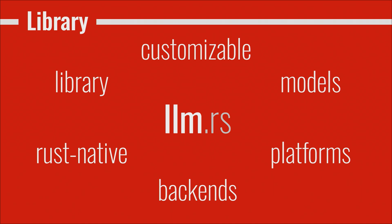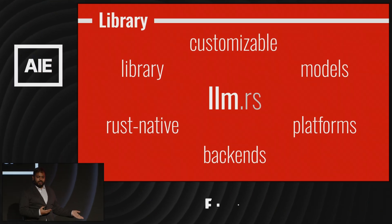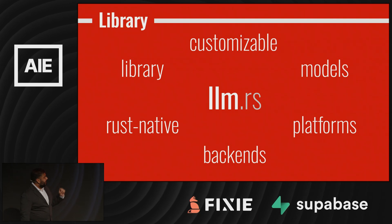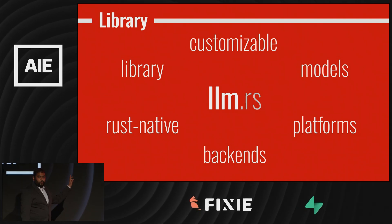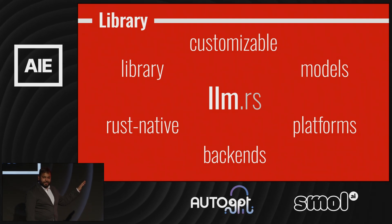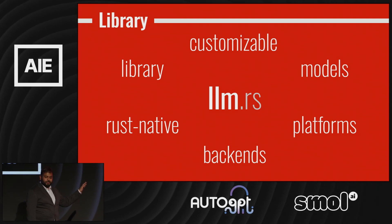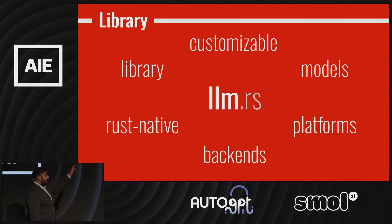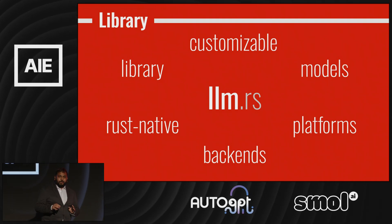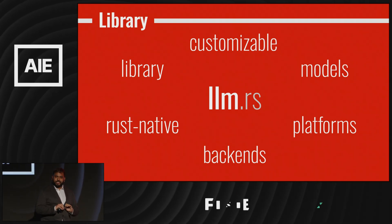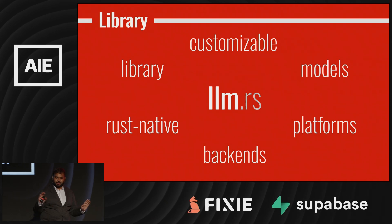You might be wondering: if llama.cpp exists, why use LLM.RS? Well, with LLM.RS I had six principles in mind. It must be a library — when I first started in March, llama.cpp was not a library, it was an application, and that made it impossible to reuse. It must not be coupled to an application. You must be able to customize its behavior — go in and change every little bit of it to make it work for your application. And we shouldn't make any assumptions about how it's going to be used.